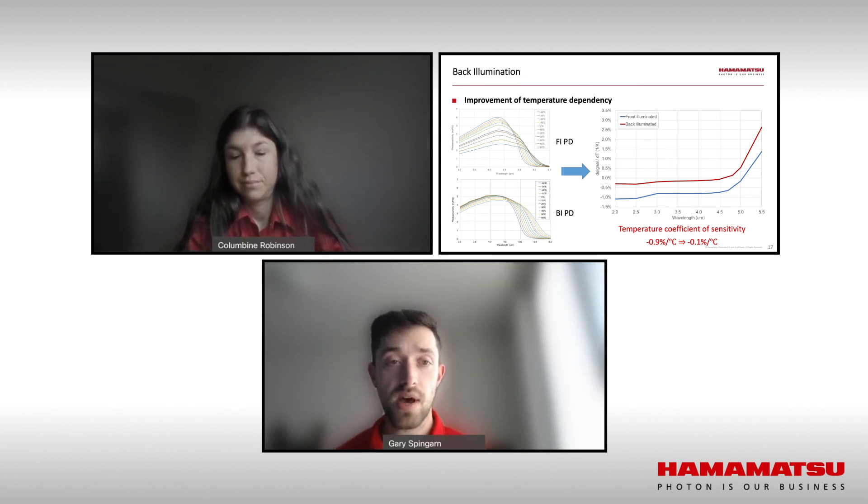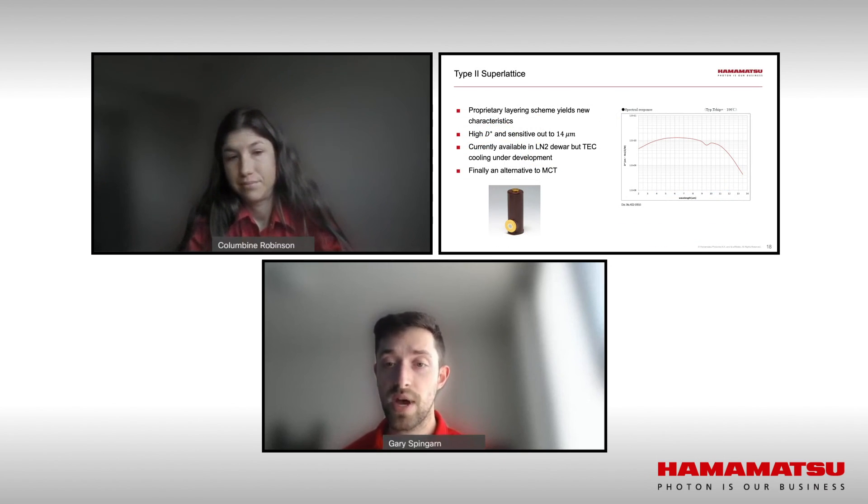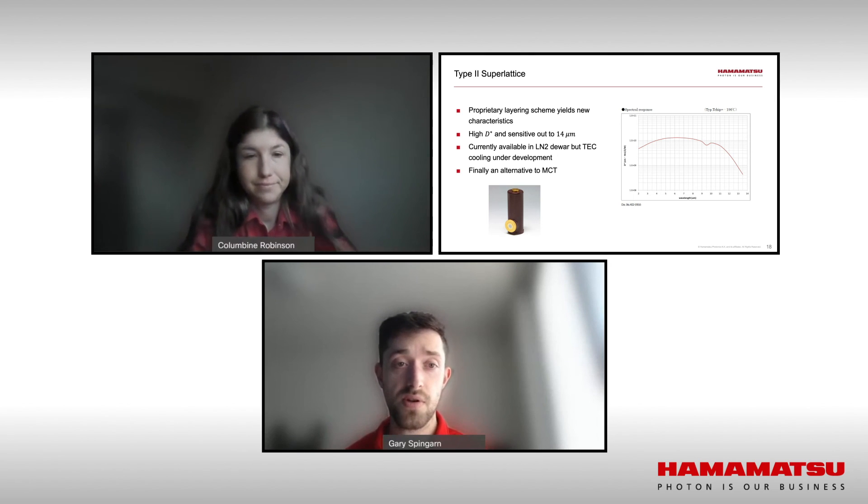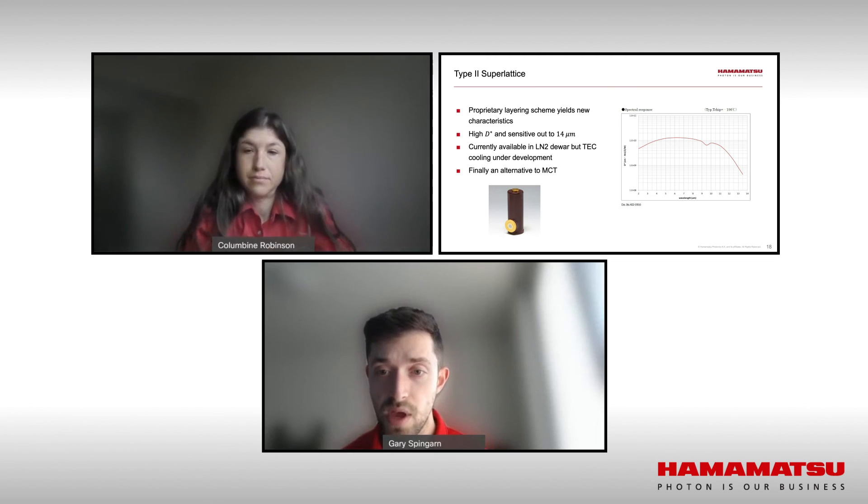Next, I'd like to mention the Type 2 superlattice. Now, InAsSb on its own cannot go past 10 microns due to its physical characteristics and band gap. However, through a proprietary layering scheme of active material, much like you would think of with a quantum cascade laser, the physical characteristics can change. We provide a detector that is an alternative to MCT that can go out to 14 microns. We now have a model available with liquid nitrogen cooling, and there is now a true alternative to the MCT at longer wavelengths.